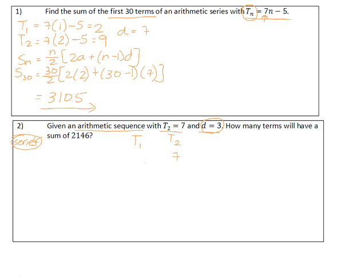So term 1, term 2. We know that term 2 is 7, and we know that the difference to get from term 1 to term 2 was to add 3. That means that term 1 must have been 4. So we now have enough information to substitute into our series formula.